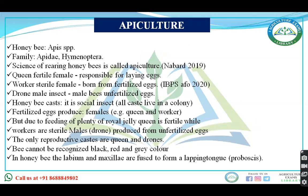Now let's have some information regarding apiculture. Honey bee, Apis species, family Apidae. The science of rearing honey bee is known as apiculture. The queen is a fertile female responsible for the laying of eggs. Workers are sterile females, and it is clearly noted they are born from fertilized eggs.